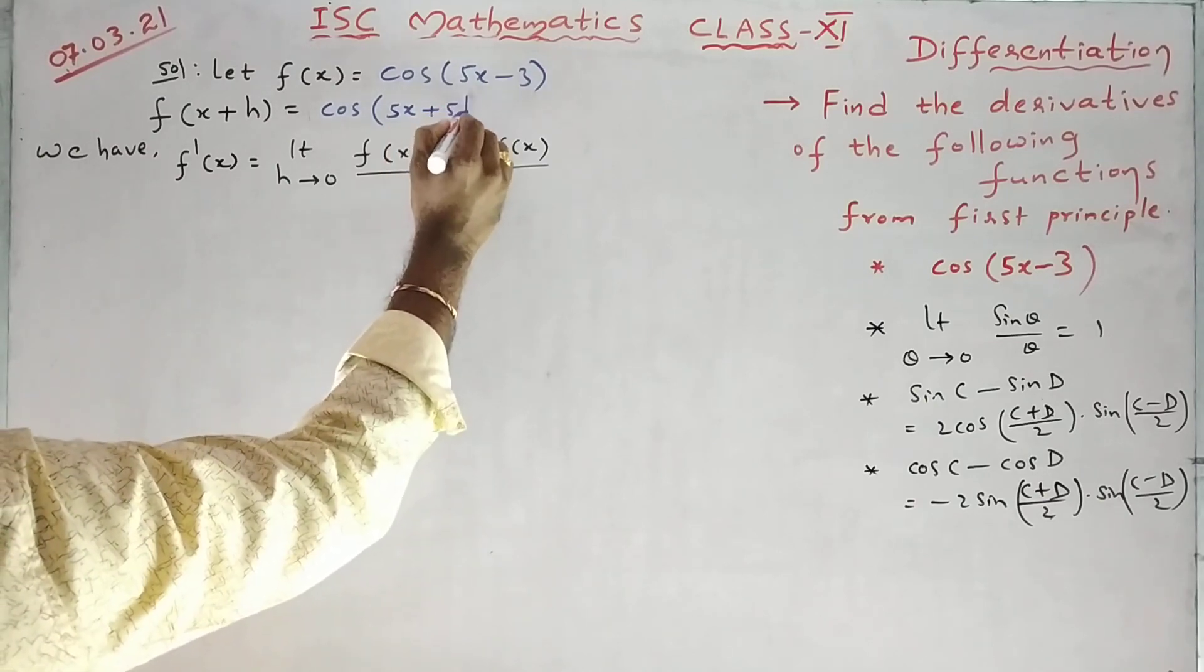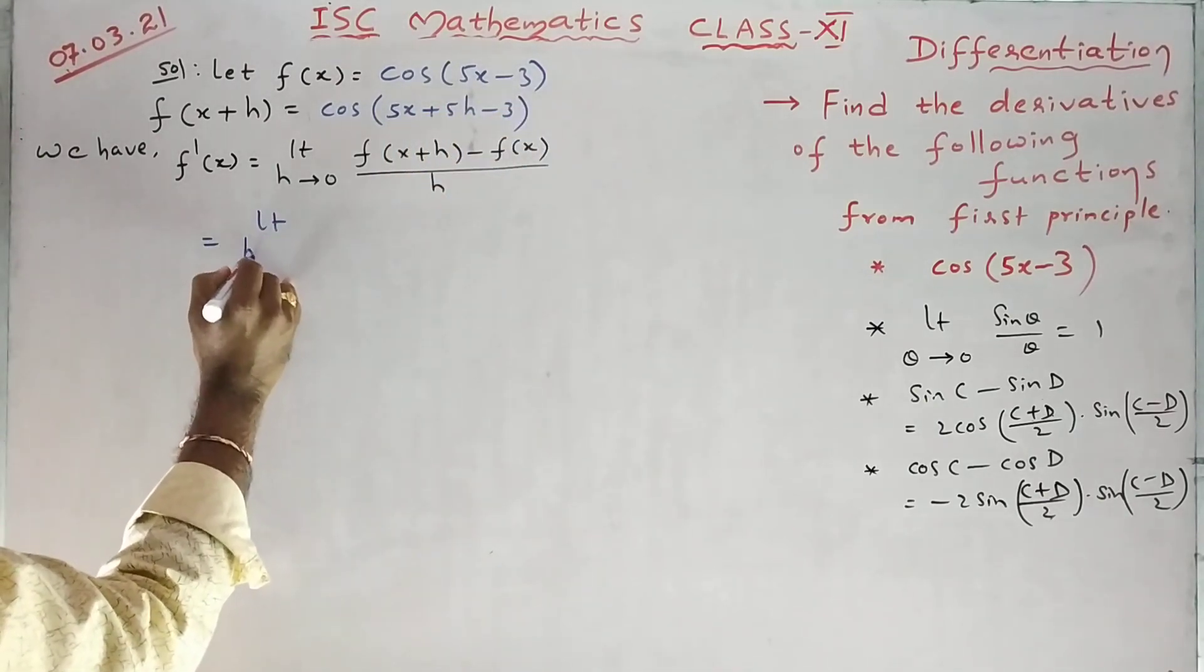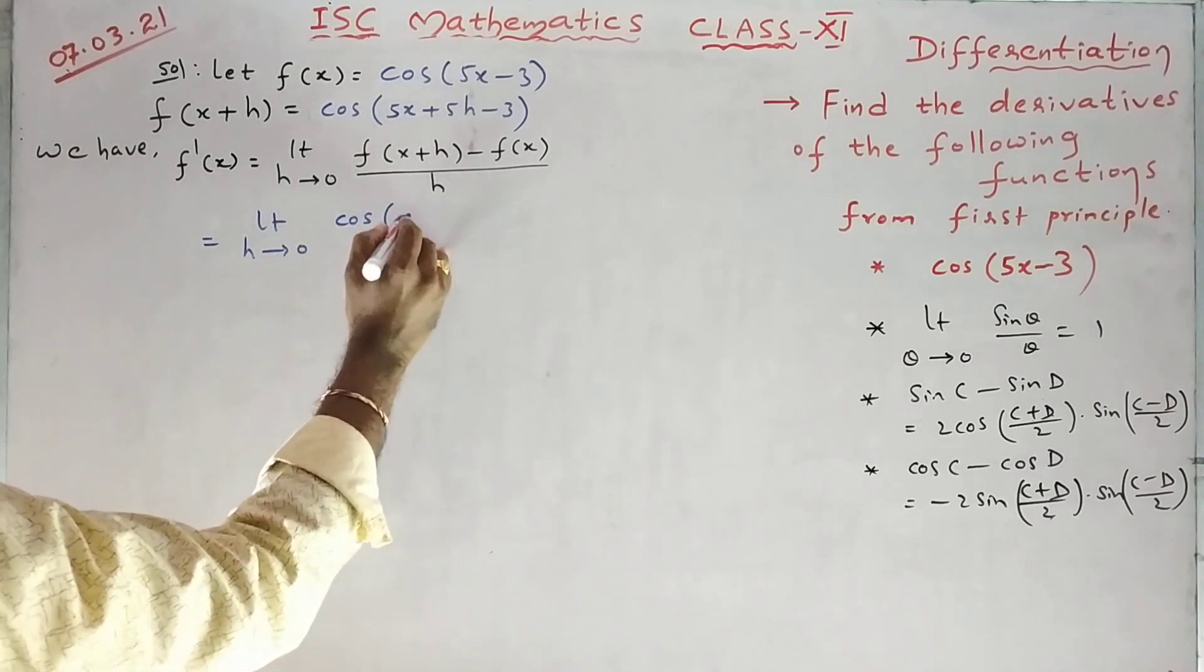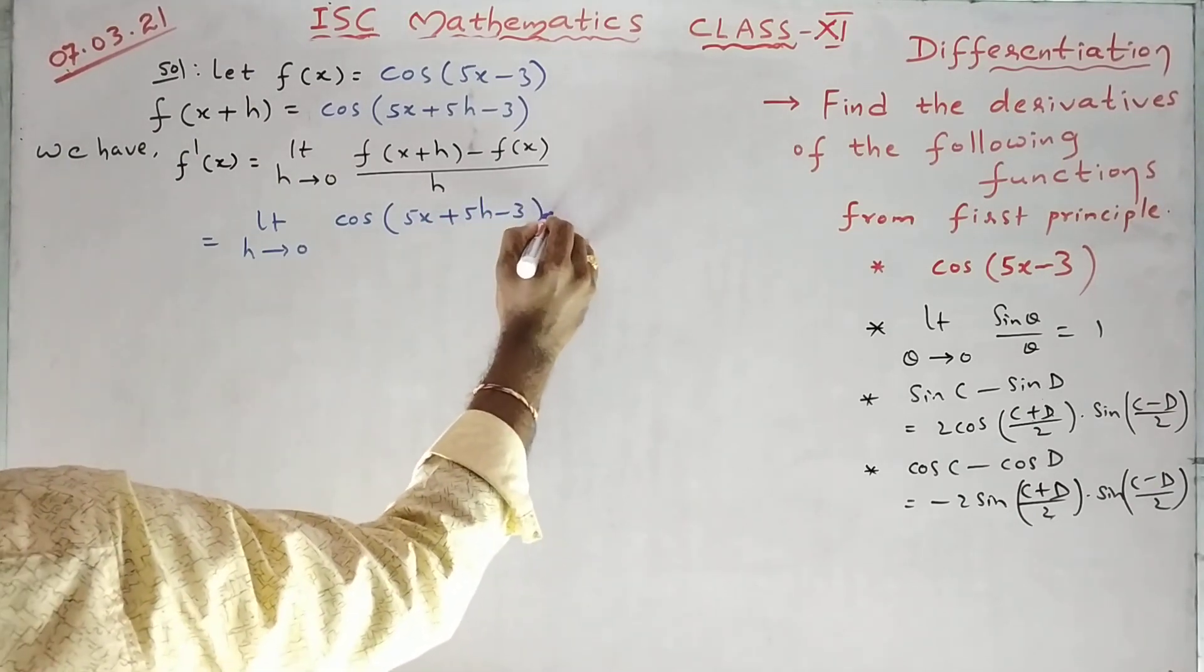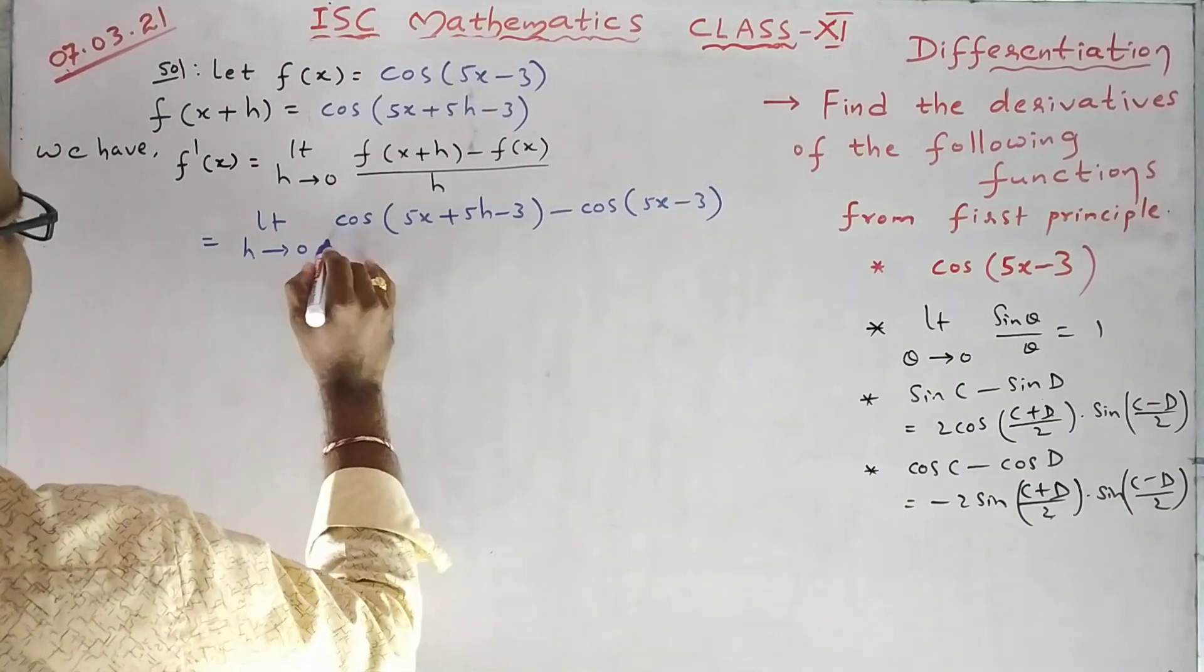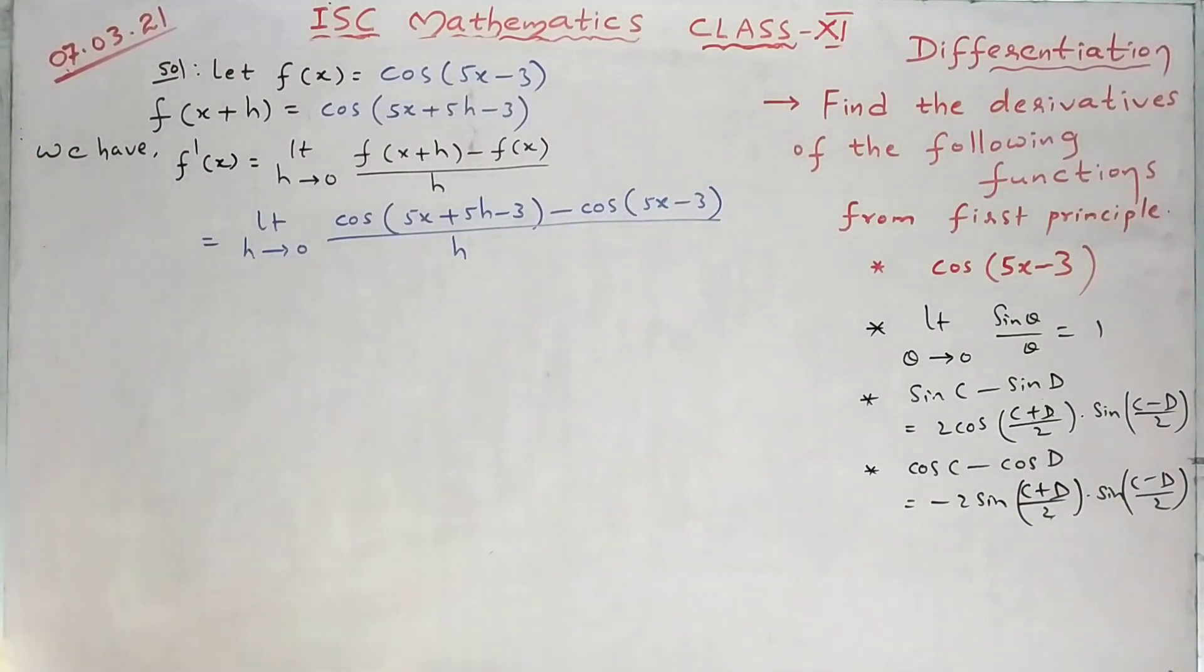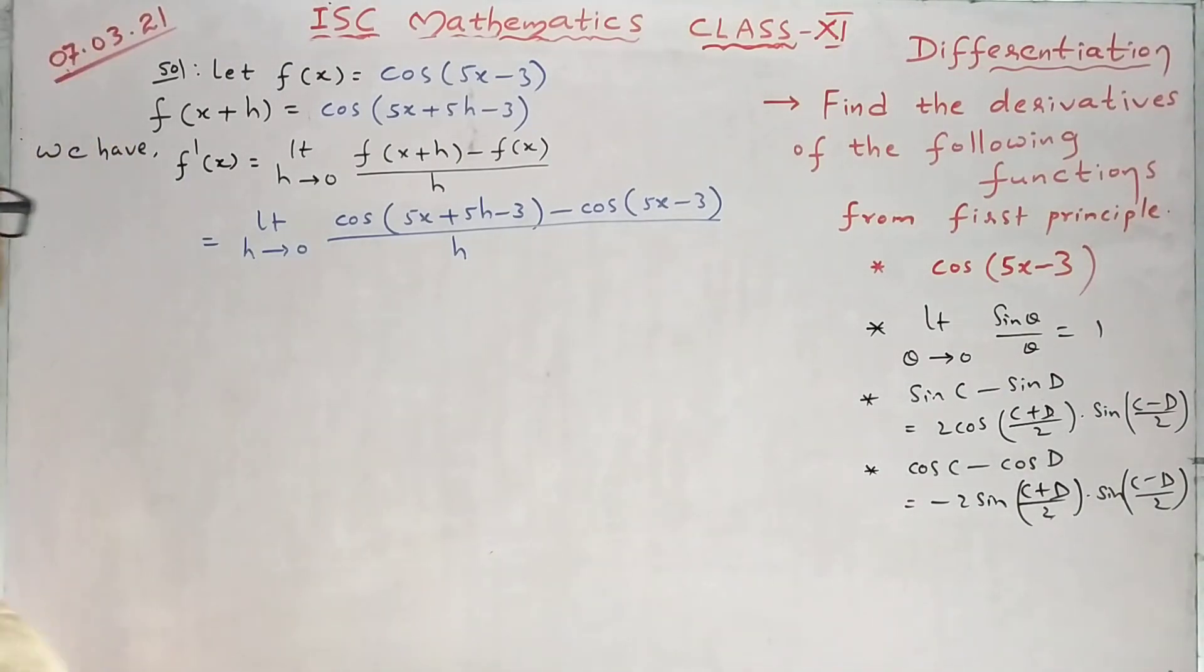So 5x plus 5h minus 3. Limit h tending to 0. F of x plus h means cos of 5x plus 5h minus 3 minus cos of 5x minus 3 upon h. Hope it is clear. Did you understand that step?